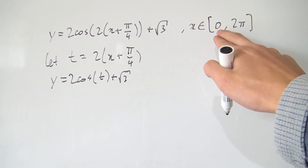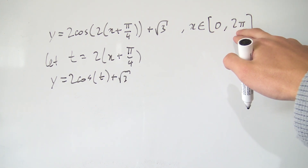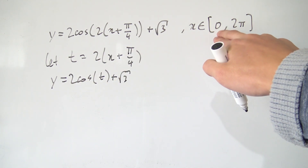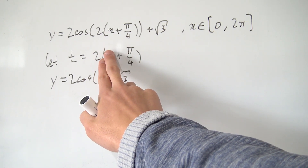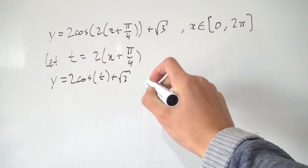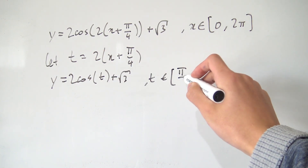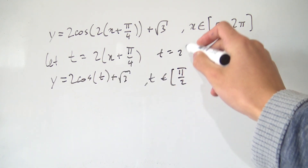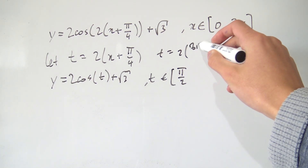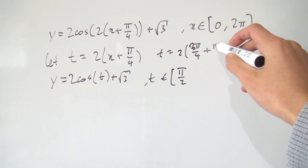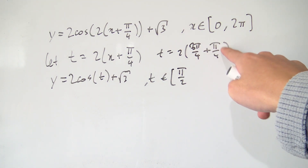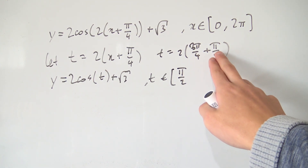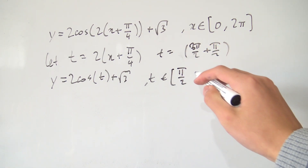To change the domain, we substitute the endpoints into our substitution. If we plug our starting point x = 0 in, we get 2 times π/4, so t starts at π/2. If we plug x = 2π in, t becomes 2 times 2π plus π/4, which we can rewrite as 8π/4 plus π/4. So 8π plus π is 9π, and the 2 cancels with the 4, giving us 9π/2. So our t-domain runs from π/2 to 9π/2.